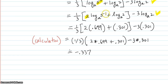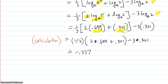Now write everything out: one-third times the quantity 2 times log base A of 5, which we're given is 0.699, plus log base A of 2, which we're given to be 0.301. Then we have minus 3 times log base A of 2, which we're given to be 0.301.